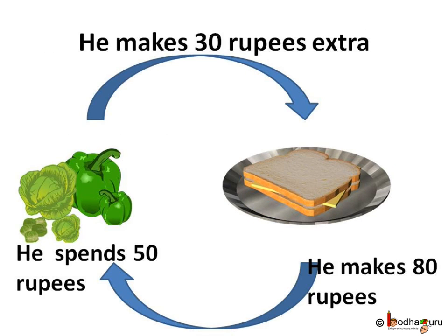If he buys vegetables spending 50 rupees again the next day, still a few rupees would be remaining with him. He would have 80 minus 50, which is 30 rupees. This 30 rupees is for his family. This means he earns an extra 30 rupees every day.